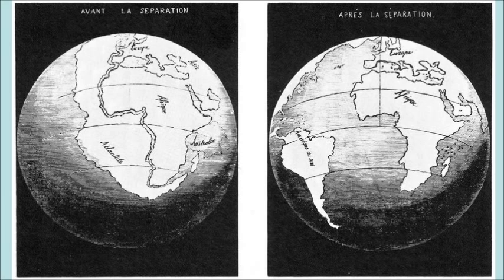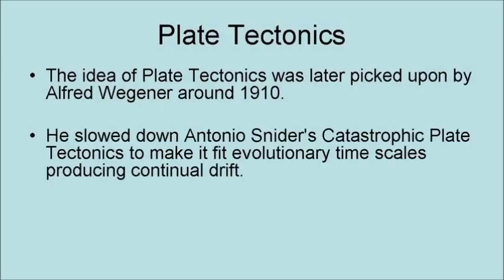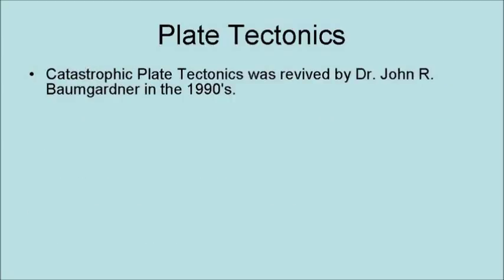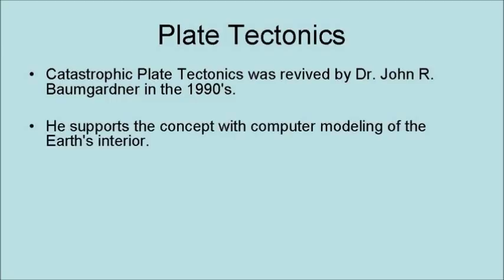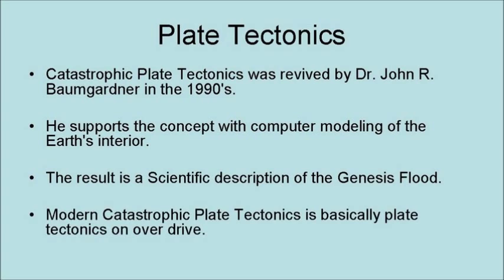This image from the book The Creation and Its Mysteries Unveiled shows the continents before and after separation. The idea of plate tectonics was later picked up by Alfred Wegener around 1910. He slowed down Antonio Snyder's catastrophic plate tectonics to make it fit the evolutionary timescale, producing continental drift. This slowed-down version of plate tectonics became an establishment theory around 1963. However, catastrophic plate tectonics was revived by Dr. John Baumgardner in the 1990s, who supports the concept with computer modeling of the Earth's interior. The result is a scientific description of the Genesis flood — modern catastrophic plate tectonics is basically plate tectonics on overdrive.